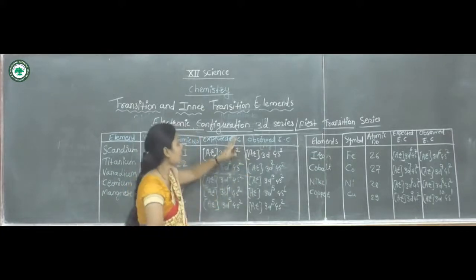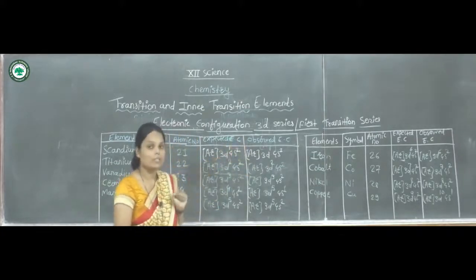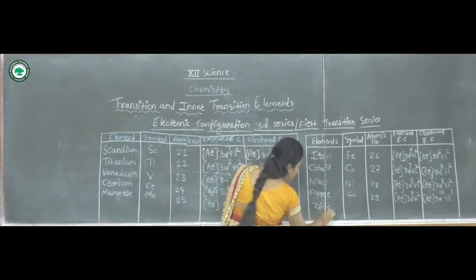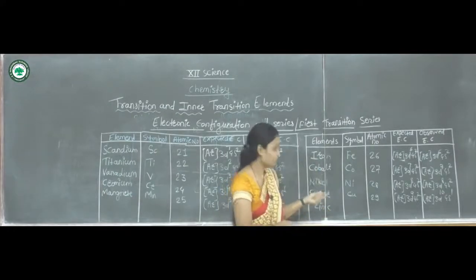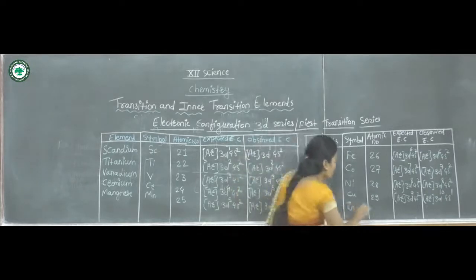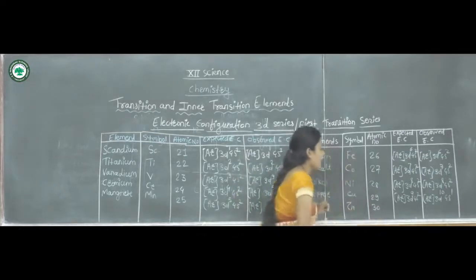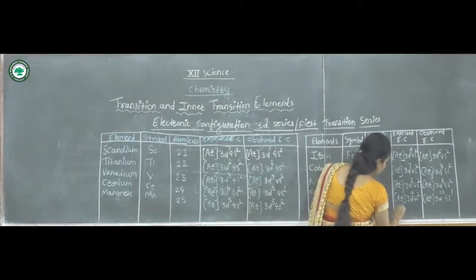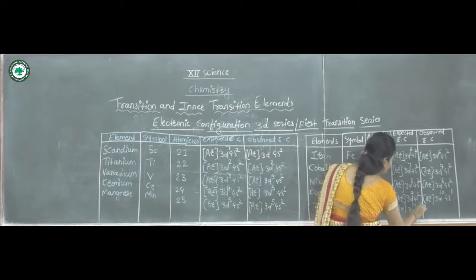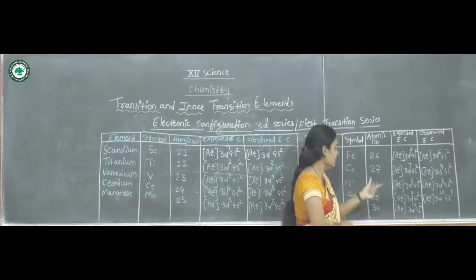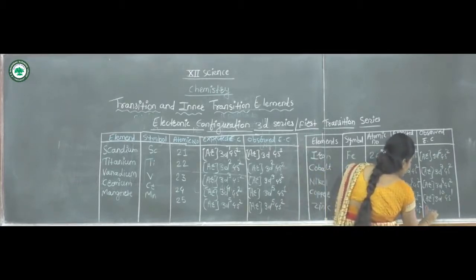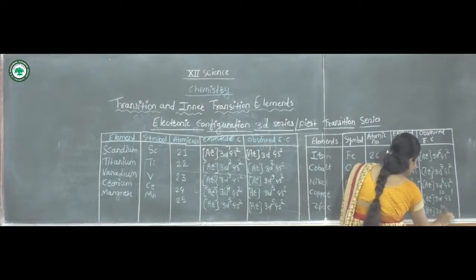The last element of the 3D series and first transition series is Zinc, symbol Zn, atomic number 30. The electronic configuration is [Ar] 3d¹⁰ 4s². The observed electronic configuration is the same: [Ar] 3d¹⁰ 4s².